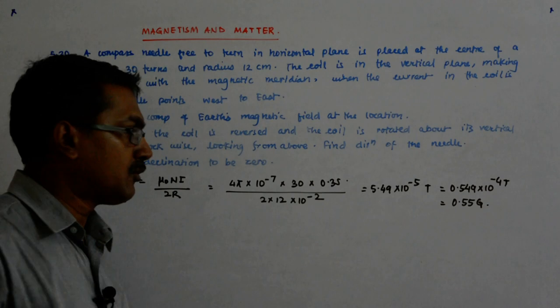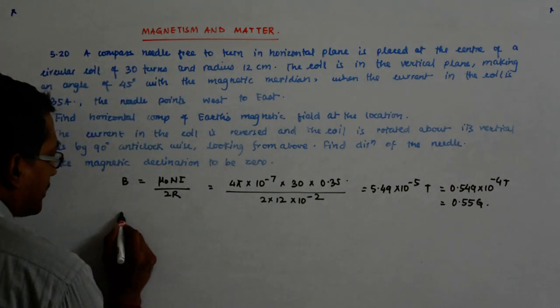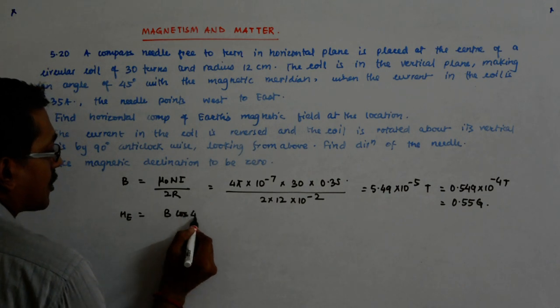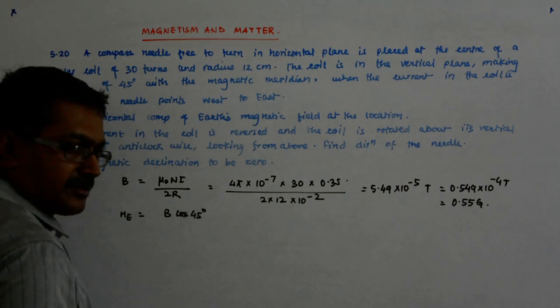So Tesla, that becomes 0.549 into 10 to the power minus 4 Tesla, that is equal to 0.55 Gauss. Now 0.55 - what is my earth's horizontal magnetic field? As we just saw is B into cos 45 degrees.